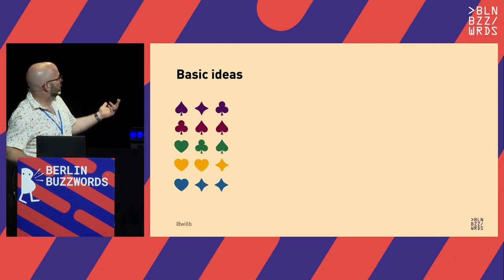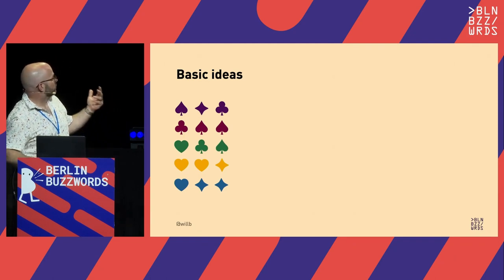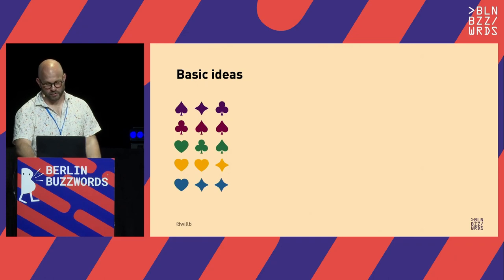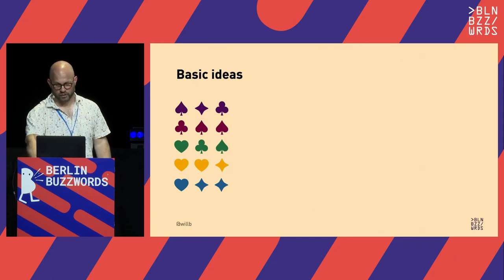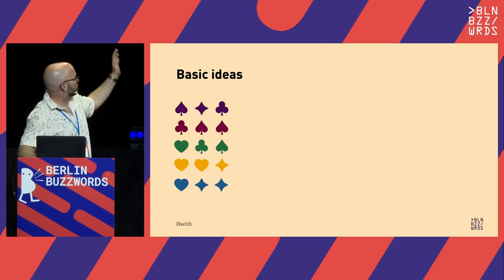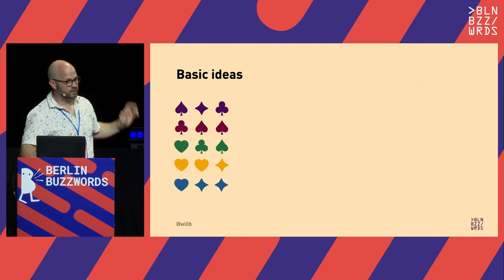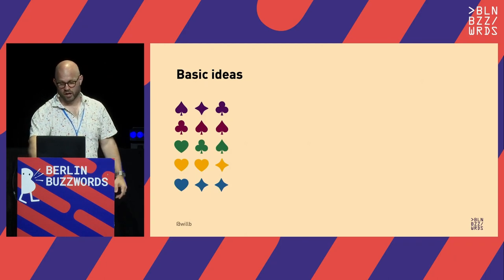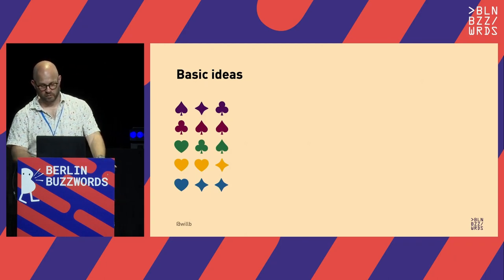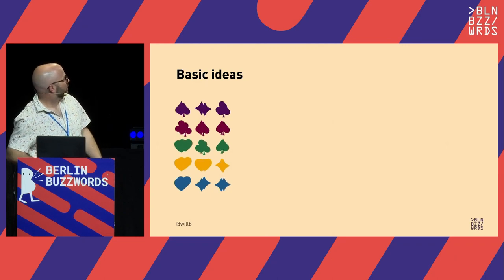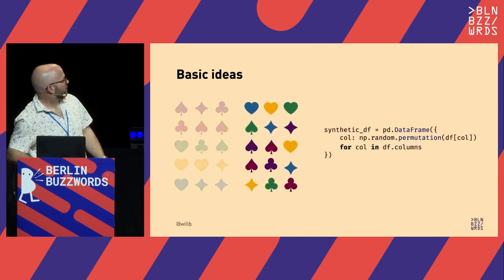Sampling each feature individually — if we have some cards with French suits, we can just shuffle each column independently and get some synthetic data. This is very easy to do in Python, not particularly efficient, but it will work.